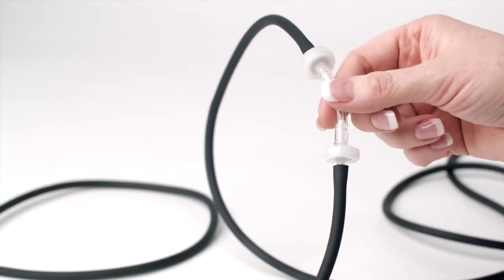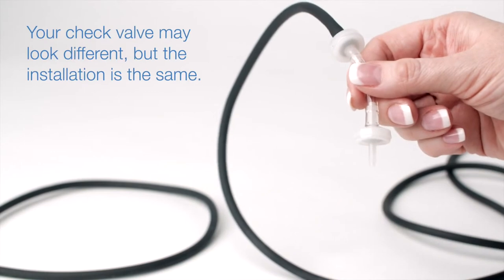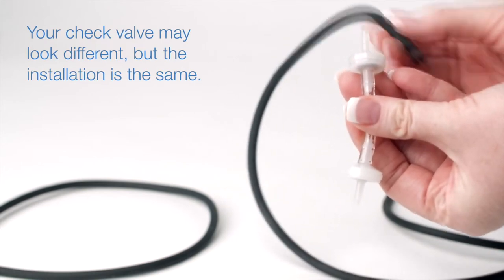Grasp the barrel of your current check valve firmly and pull the tubing away. It may be necessary to use a twisting motion. Repeat to disconnect the tubing from the other side.